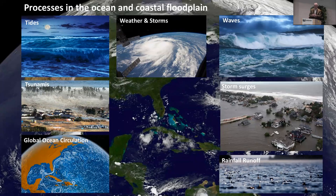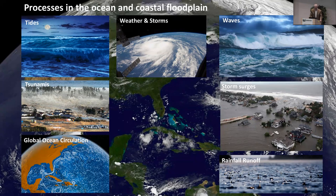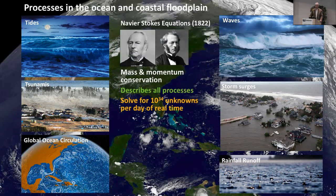Looking at the processes of the ocean, it's incredibly rich in processes with a variety of forcing mechanisms. We start off with tides, which are gravitationally driven; tsunamis, which are tectonically driven; and then weather and storms drive a lot of the circulation and energy in the ocean. We go from global circulation engines to wind waves to storm surges, and in between you have gravity waves and rainfall runoff. If you're going to model this stuff, as Jenny said this morning, you just go to the Navier-Stokes equations and you're all set — it covers everything.